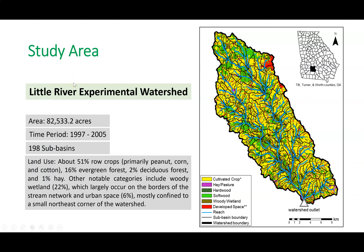We selected the Little River Experimental Watershed, which, as you can see in the figure on the right-hand side, is spread across three counties in South Georgia: Tift, Turner, and Worth counties. It covers almost 82,000 to 83,000 acres of land and has a mixed land use. About 50% of the land is under agriculture, 16% is evergreen forest (pine plantations), 2% is hardwoods, 1% is hay, and about 22% is woody wetlands. Stream networks and urban space occupy close to 6% of the area.